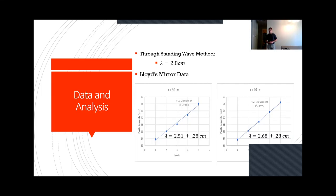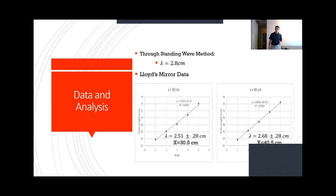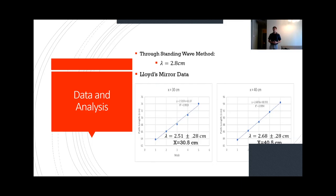We now know that Lloyd's mirror can be used as an accurate way to measure wavelength. As a side check, the equation s equals m lambda plus 2x means that the y-intercept is going to be 2x. We looked at the y-intercept and solved for x. For the 30 centimeter trial we got 30.5 centimeters, and for the 40 centimeter trial we got 40.5 centimeters. These are very close to the actual values, which once again shows this is an accurate way to use Lloyd's mirror to find not only wavelength but also distance from receiver to transmitter.